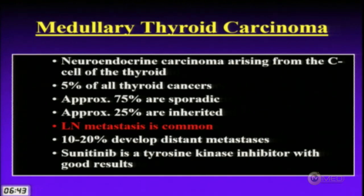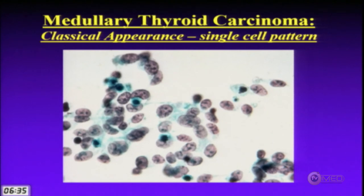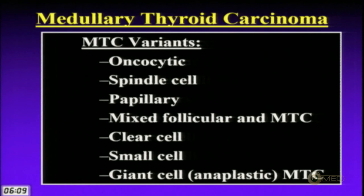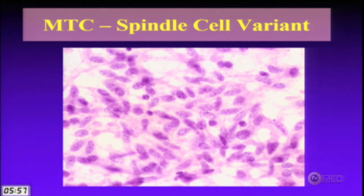Summary of medullary carcinoma: derived from C cells; inherited versions have C cell hyperplasia. About 75% are sporadic, 25% inherited. Lymph node metastasis is common — we get FNAs of enlarged lymph nodes showing dispersed single cells with a neuroendocrine look; always think of medullary carcinoma. The giant cell variant is extremely rare and looks very much like anaplastic cancer. Sunitinib, a tyrosine kinase inhibitor, has good results in medullary carcinoma patients.